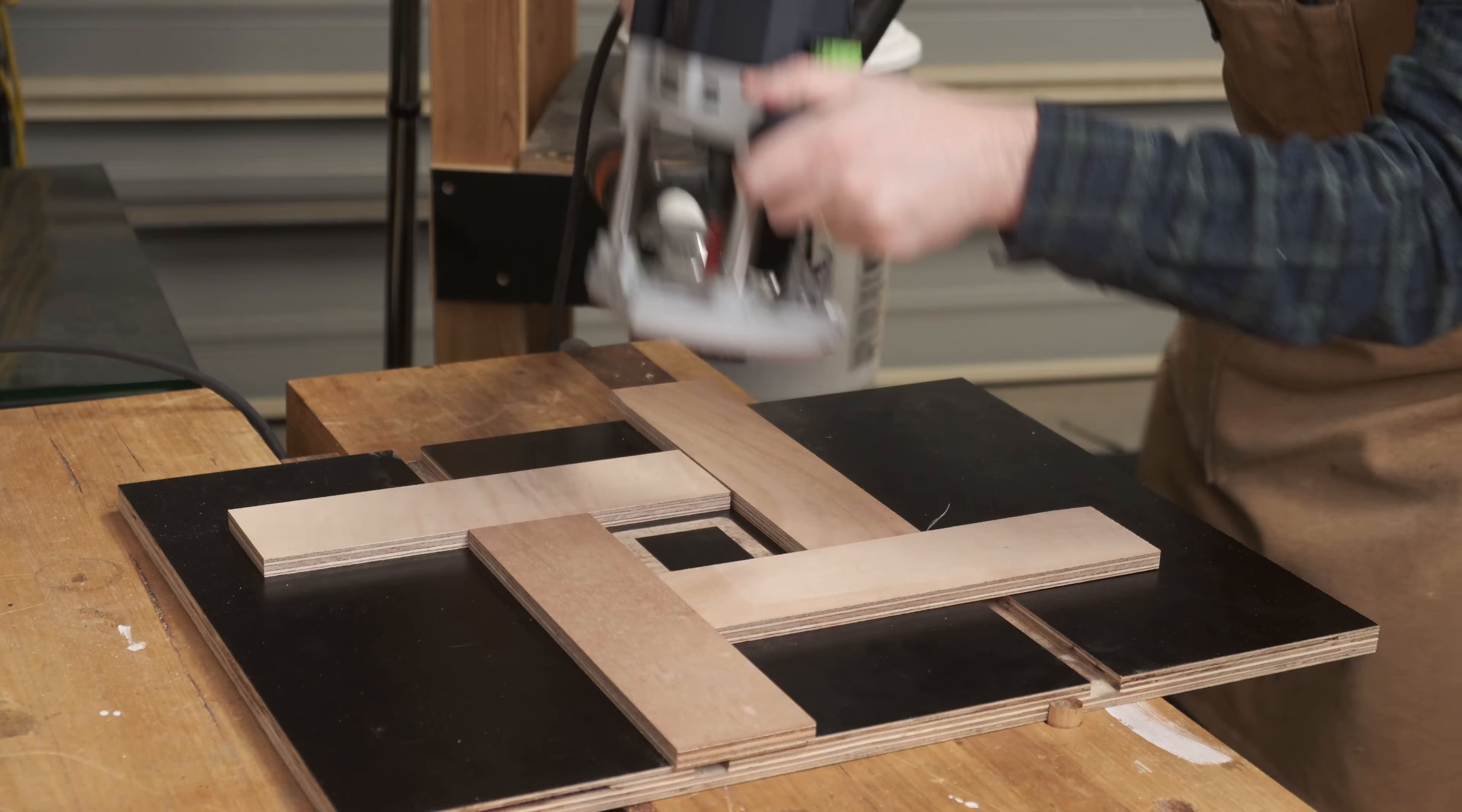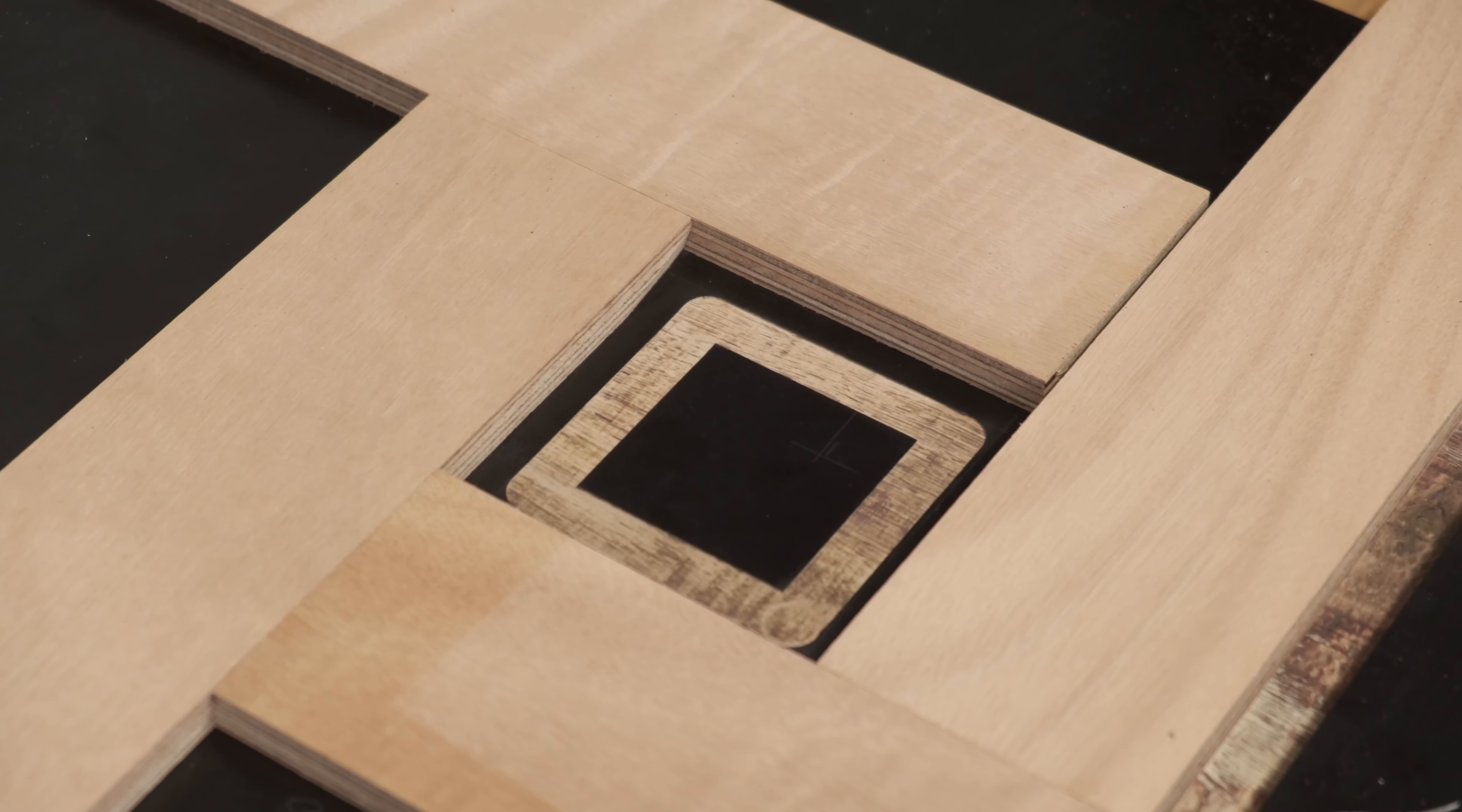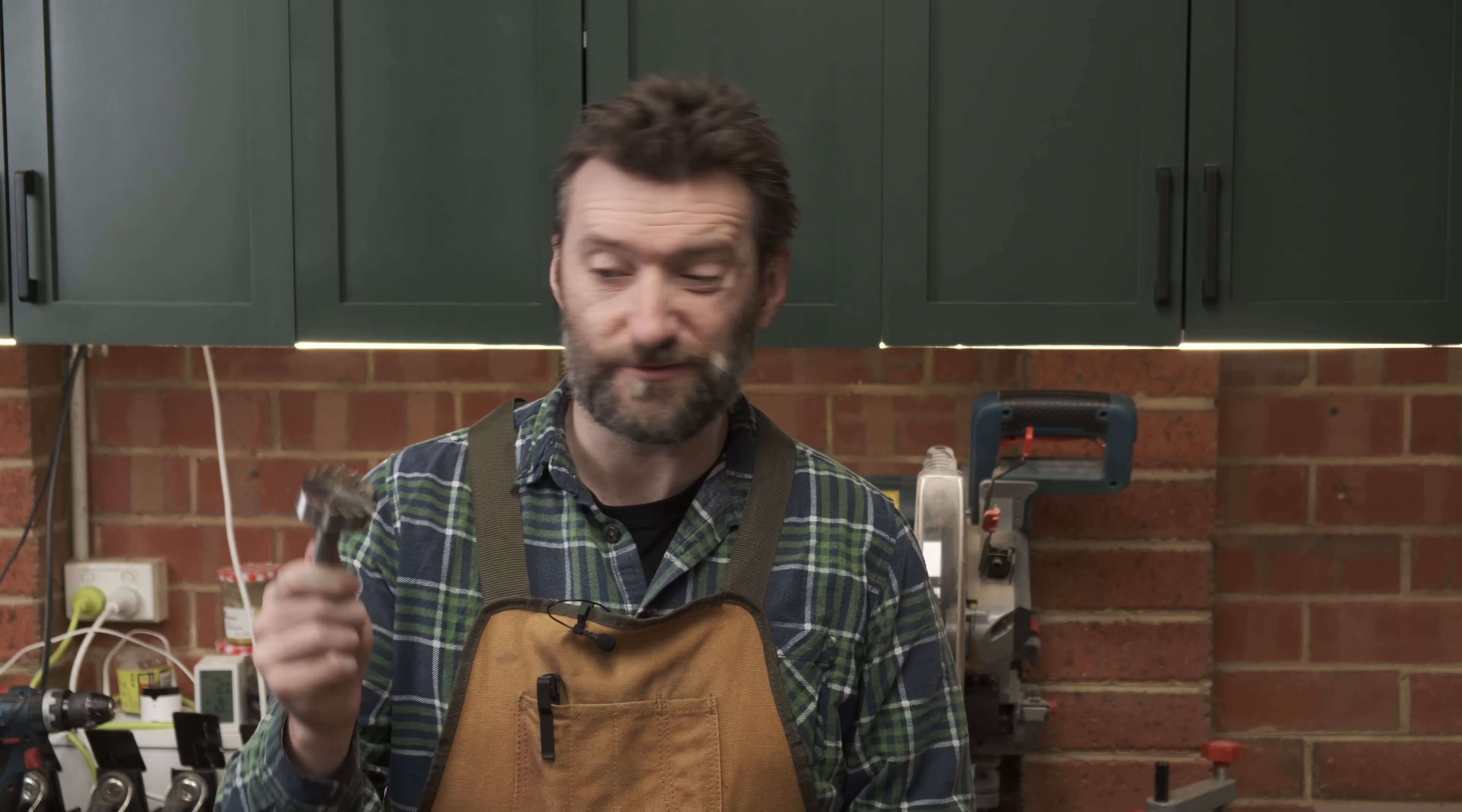Now you might wonder why a square throat plate for the removable insert rather than round. After all with a round one you can use a large Forstner bit, the largest one I have or a hole saw or something like that and cut that circle out in no time without having to use a router. And yeah I absolutely agree that's a quicker and easier way to do it. The problem is on the insert side.